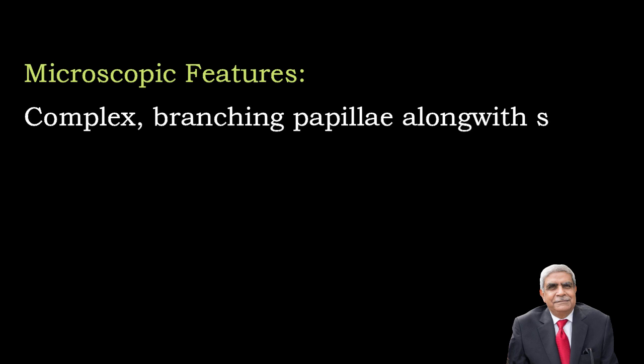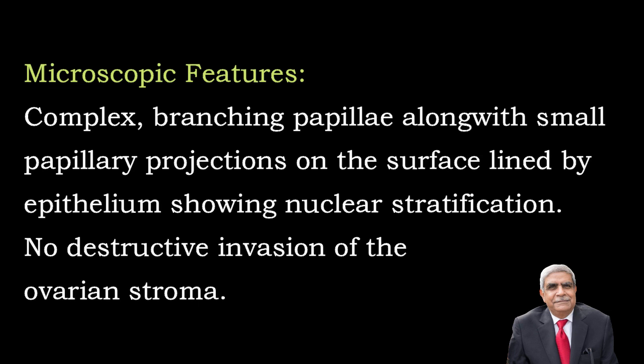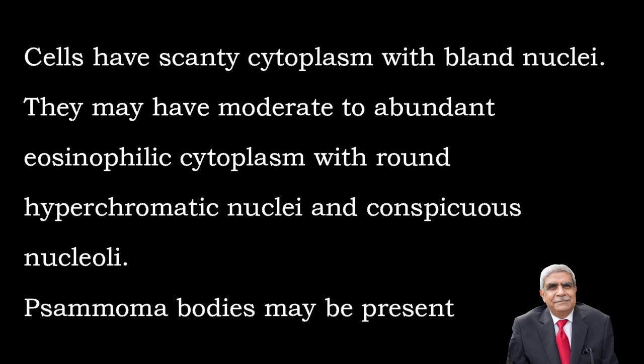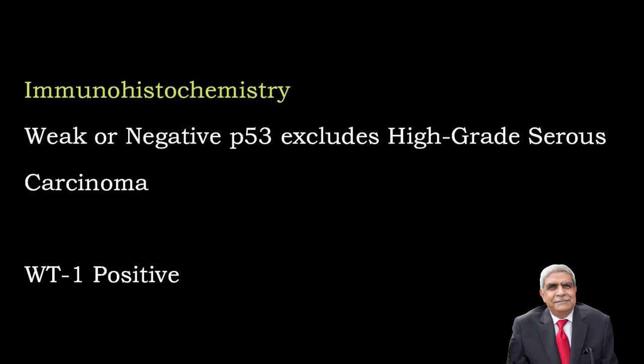Histological features of serous borderline tumors: under the microscope, there is increased complexity of the stromal papillae with branching, and stratification of the epithelium with mild nuclear atypia. However, destructive infiltrative growth into the ovarian stroma is not present. The cells have moderate to abundant cytoplasm with round hyperchromatic nuclei and prominent nucleoli. Psammoma bodies may or may not be present.